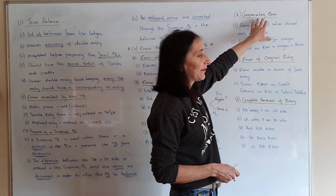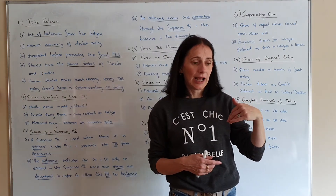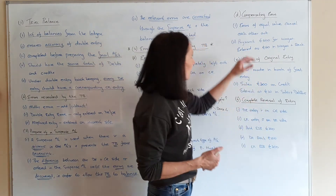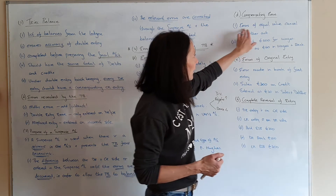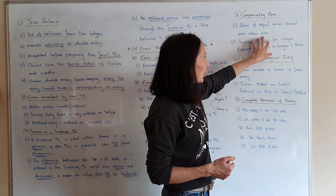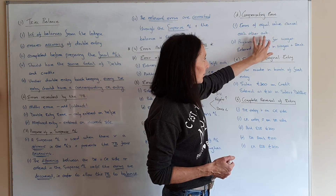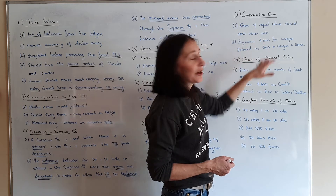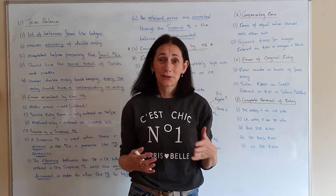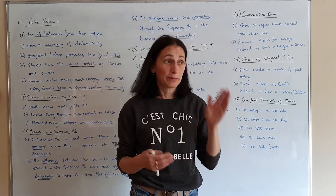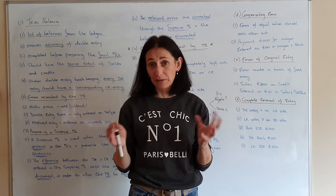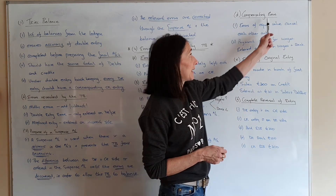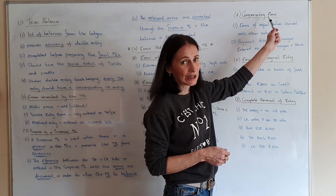Compensating error: if something compensates, it kind of fixes itself. Errors of equal value cancel each other out. For example, a payment of 600 for wages where you put it in as 60 — you put it under the debit and the credit so everything balances, but you put in the wrong amount. That's a compensating error.